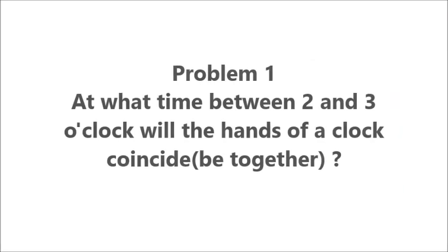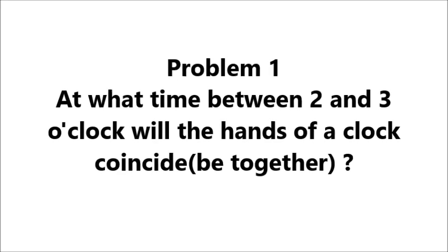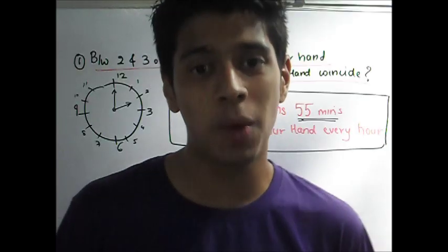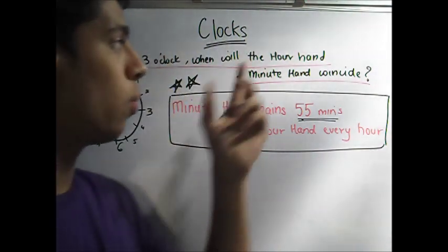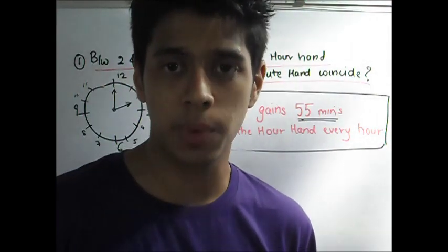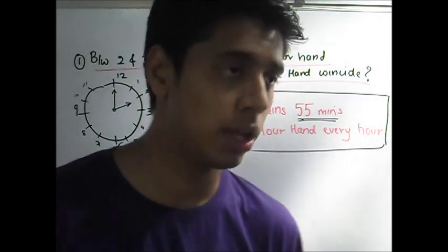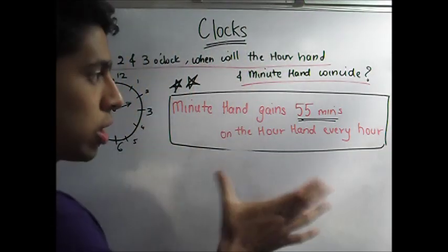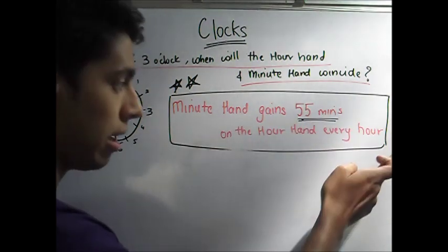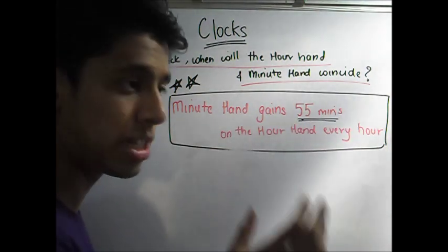Problem 1: At what time between 2 and 3 o'clock will the hands of a clock coincide? Problem 1 asks that between 2 and 3 o'clock, when will the hour and the minute hand coincide. As I said in my first video, the hour hand and the minute hand will coincide once every hour. A very important concept is that the minute hand gains 55 minutes on the hour hand every hour. If you don't understand how this works, you need to go watch my first video — I have explained it completely.